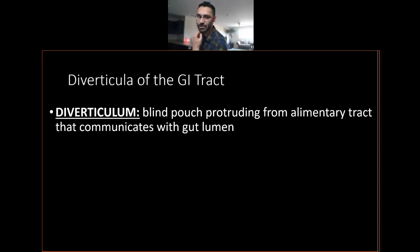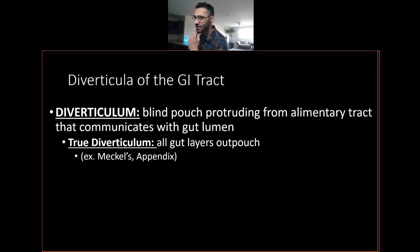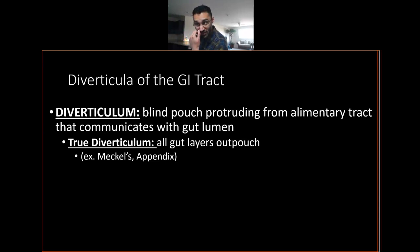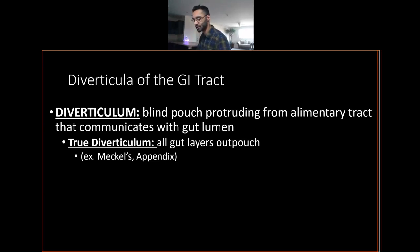Diverticula are pretty simple for the most part. I think of a diverticulum as a pouch coming out of your lumen. A true diverticulum has all the layers of your gut wall coming out — mucosa, submucosa, and muscularis. This distinction becomes really important, especially for board exam purposes. Meckel's diverticulum is a true diverticulum, meaning all its layers come out. The appendix is a physiologic diverticulum — it should be there — whereas Meckel's and others are pathologic. Just because you see the word diverticulum, it doesn't mean it's necessarily a pathology.